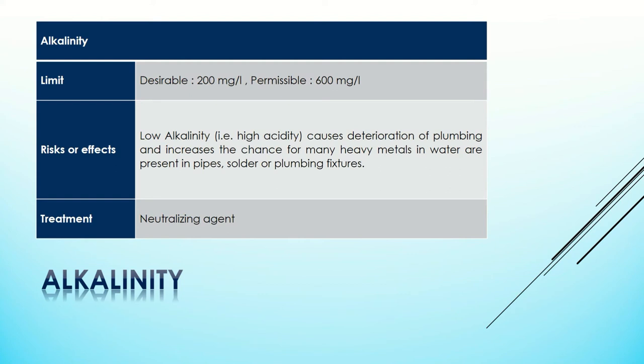Alkalinity of water: the acceptable limit set by BIS for alkalinity is 200 milligrams per liter, and if there is no other source in that area, then it can be permissible up to 600 milligrams per liter. To reduce this problem of alkalinity, we can treat the water using neutralizing agents.